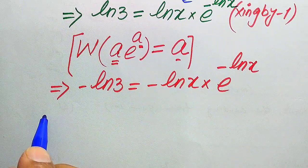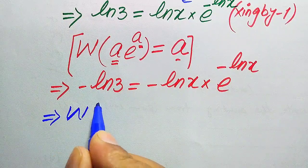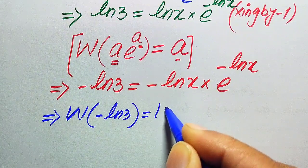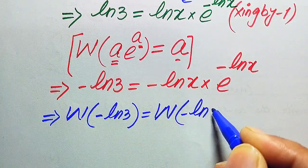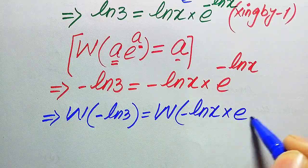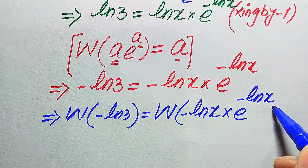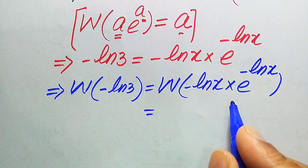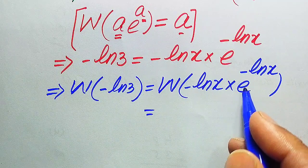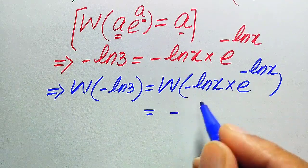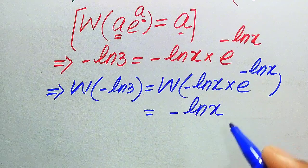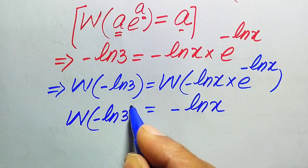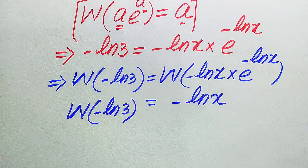Now we apply the Lambert W function on both sides: W(-log3) = W[(-logX)·e^(-logX)]. The output of this function is the exponent of e, which is -logX. So we get W(-log3) = -logX.